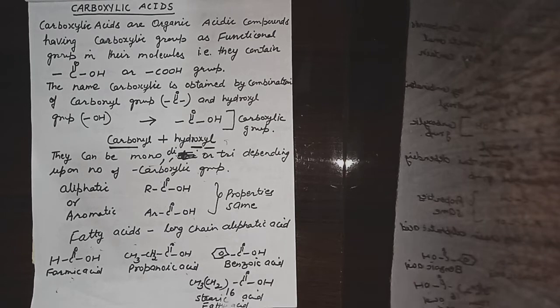The first member of carboxylic acids is formic acid, where hydrogen is attached to the carboxyl group. Propanoic acid is an example of an aliphatic acid. Benzoic acid is an example of an aromatic acid containing a carboxyl group attached to an aryl group. And fatty acids contain a long chain of carbon atoms and are aliphatic acids.